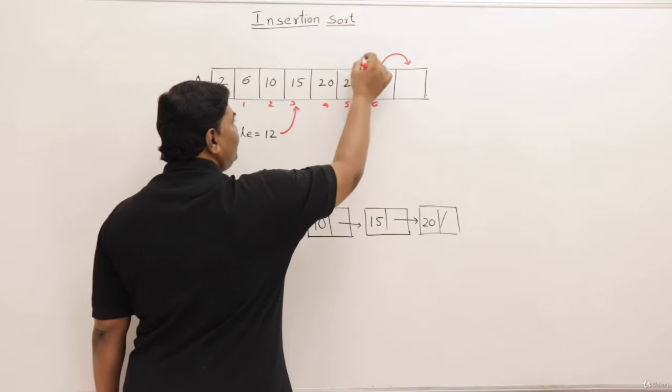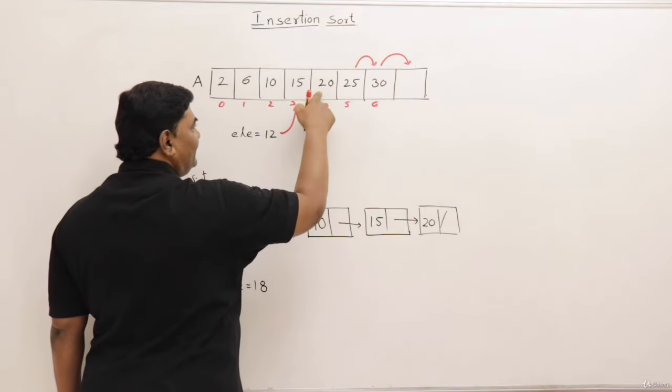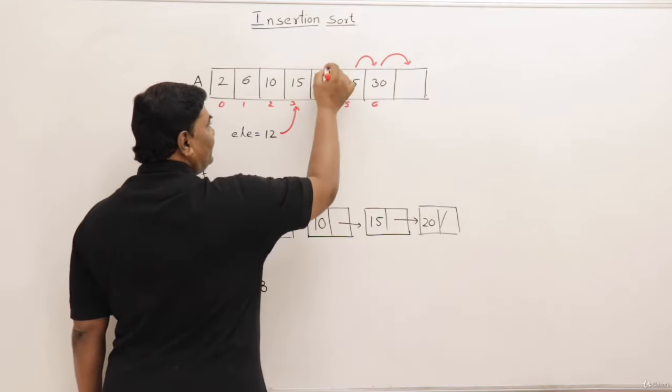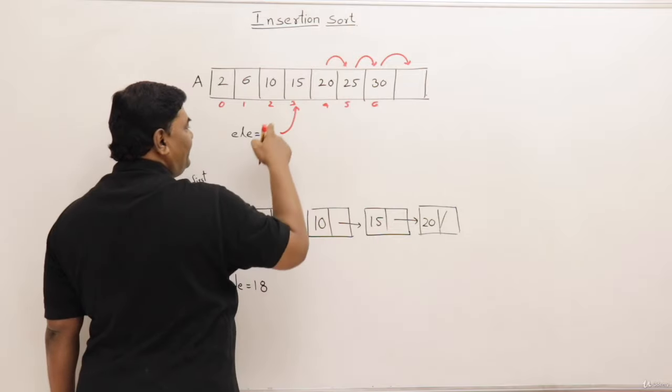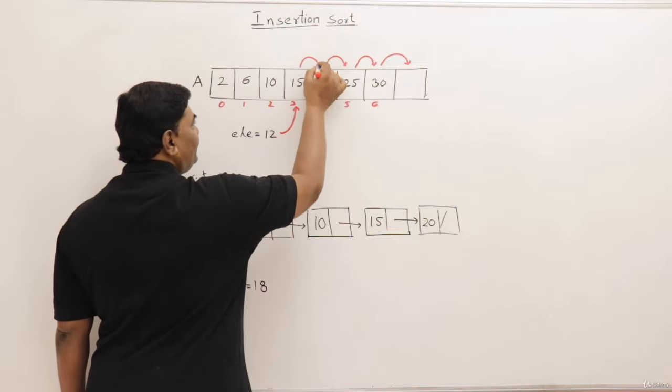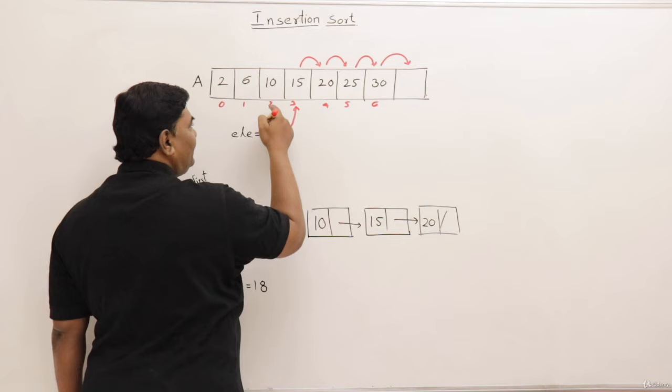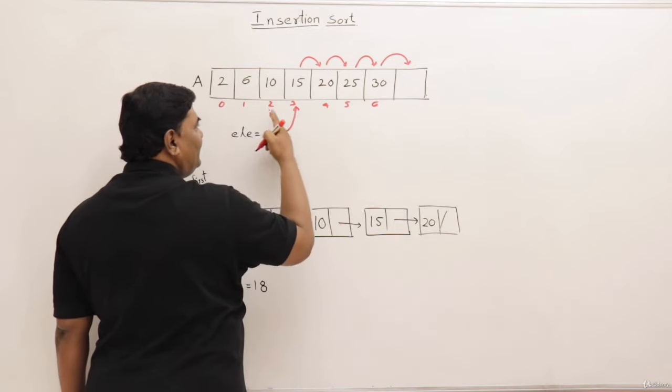25 is greater than 12. Shift it. And next element. 20 is greater than 12. Shift it. Next element. 15 is greater than 12, shift it. Then 10 is not greater than 12. So I am here now. Right now. Okay. I have moved all the elements.